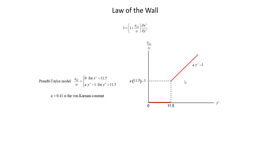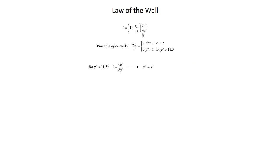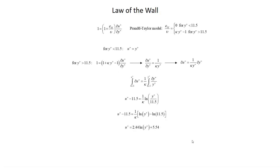Substituting epsilon_m equals zero into the differential equation for y+ less than 11.5, we get a simple equation. Separating and integrating from the origin where both y+ and u+ are zero gives u+ equals y+. This linear velocity distribution makes sense — in the viscous sublayer we essentially have the equivalent of a laminar flow.